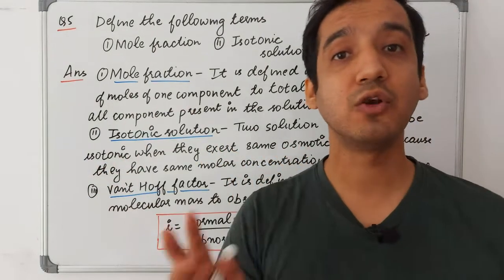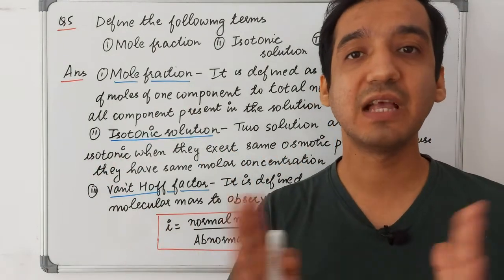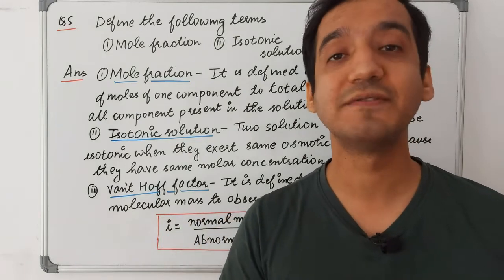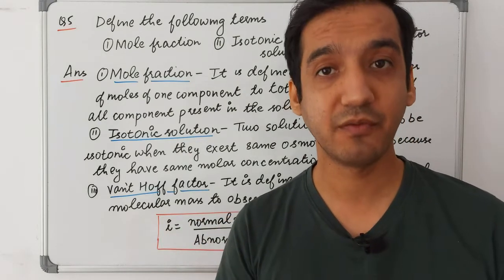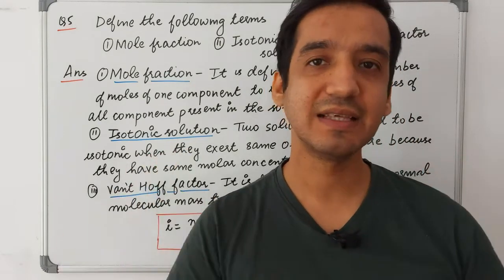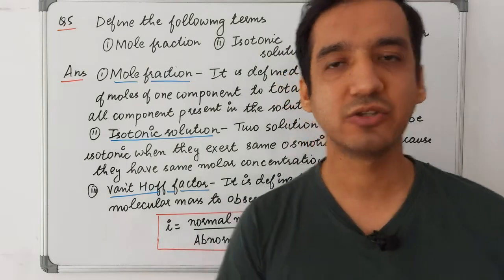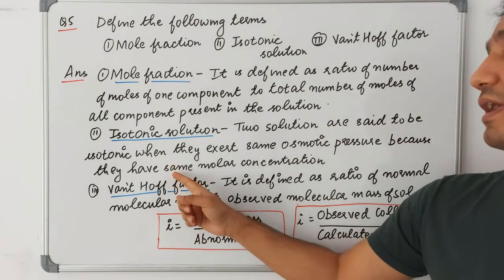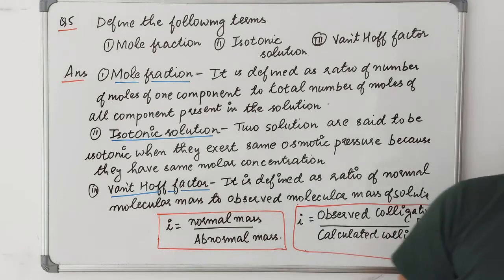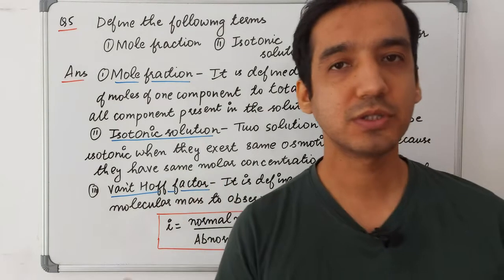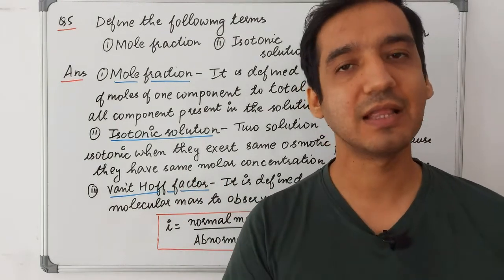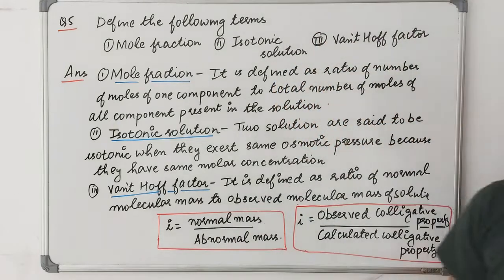Isotonic solutions are two solutions that exert the same osmotic pressure. When two solutions have the same osmotic pressure, there is no flow of solvent from one solution to the other. This occurs when they have the same molar concentration.